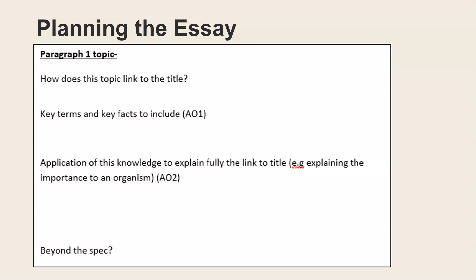When planning the essay during revision, when you have more time, you could use a structured template. First, note how the topic links to the title. Then list all key terms and key facts that are A-level standard that you want to include in AO1 — the first half of the paragraph. Then for the application section, write your example of why it's important, and if you can think of an example beyond the spec, write it there too. In the actual exam you wouldn't do this in as much detail due to time, but in revision it's great for practising structure and consolidating content.